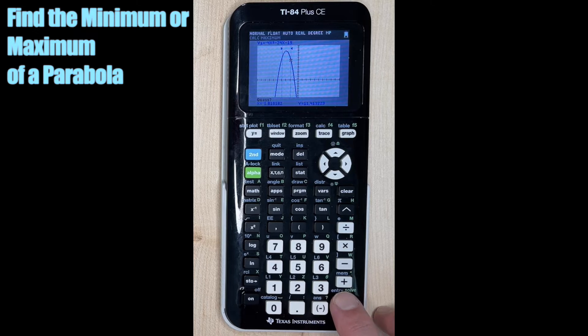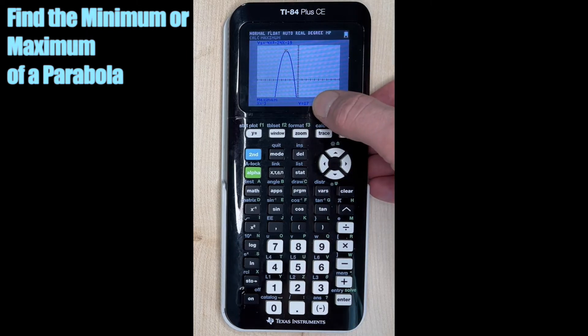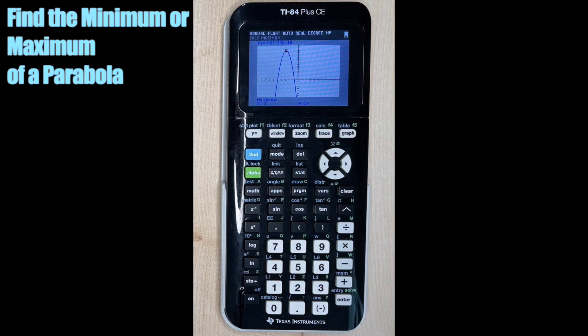And when it says guess, we hit enter one last time, and now it tells us maximum. It's going to give us a coordinate: x is negative three, y is 17. But our answer here is the y value, okay, because that's the highest or the maximum point of our parabola. So we would say the maximum is 17. Okay, so that's how we find the maximum.